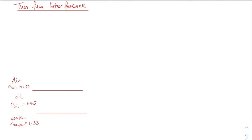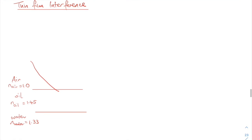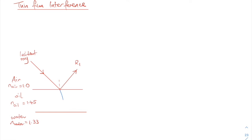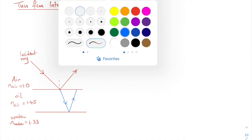Let's look at thin film interference. I have three layers here: air, oil, and water. The refractive index of air is 1.0, oil is 1.45, water is 1.33. A ray of light comes in as an incident ray. At the first boundary, the air-oil boundary, some light is reflected — I call it R1. Some light is refracted, and at the second boundary, the oil-water boundary, there is also reflection and refraction into the water.